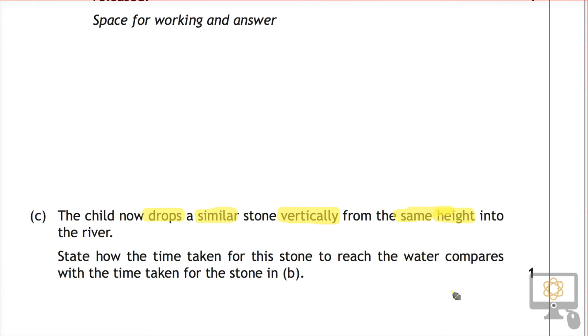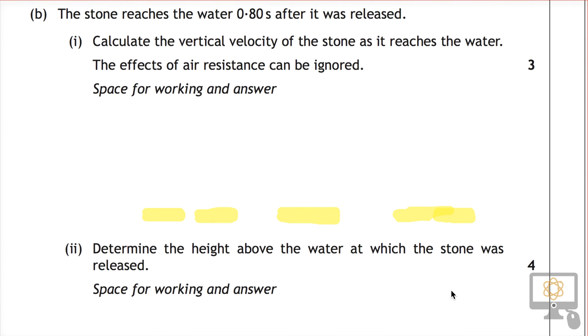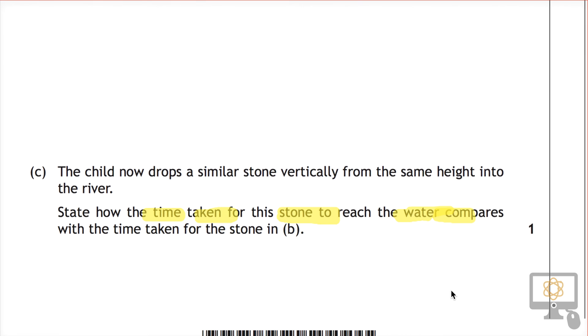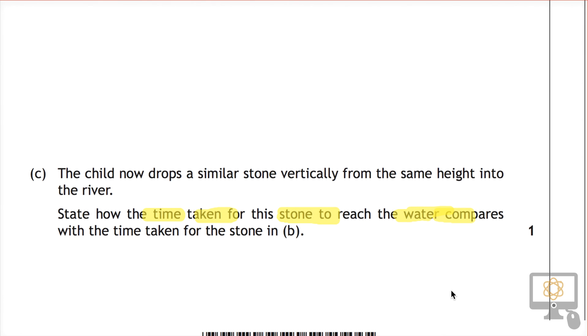So the question is state how the time taken for this stone to reach the water compares to the time taken for the stone in B. So the stone, I think if I remember rightly, originally took 0.80 seconds to hit the ground or hit the water and that was when it was thrown horizontally.